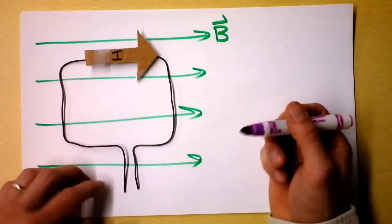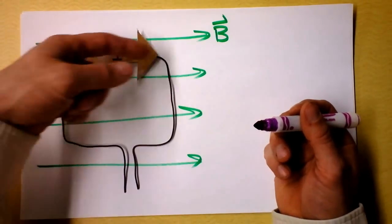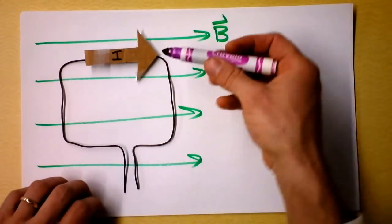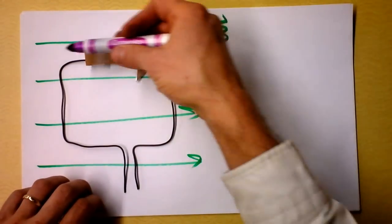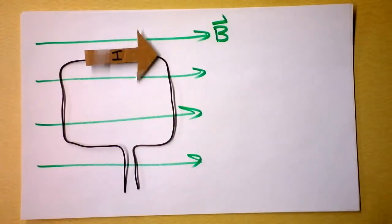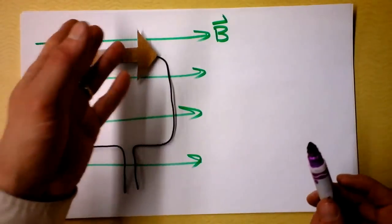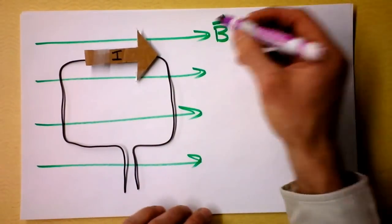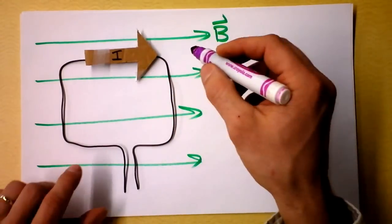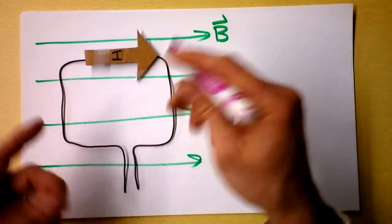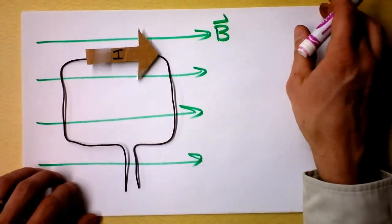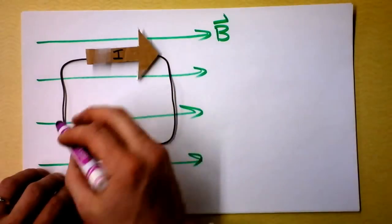Similarly, up top, the current is in the direction of the magnetic field — so that means electrons are going that direction — but there's no force because there's no angle between them. The angle's zero, so you're taking the sine of zero and that's just nothing at all.